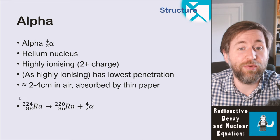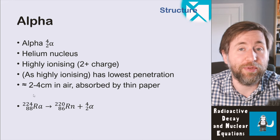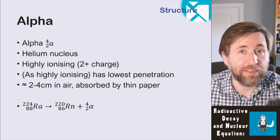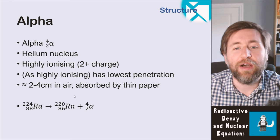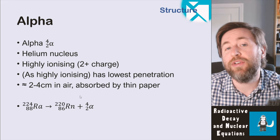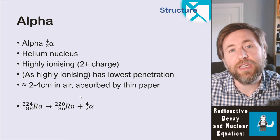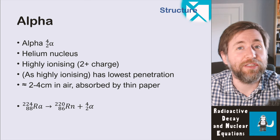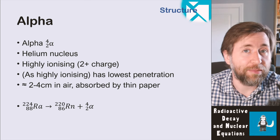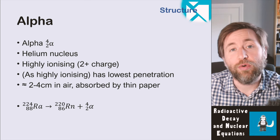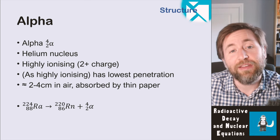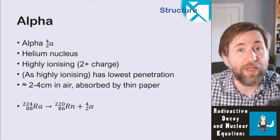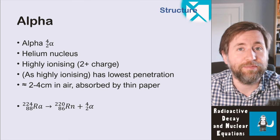If we're more than four centimeters away from an alpha source, the particles are very unlikely to hit us and ionize us. However, because it's very ionizing, if it gets inside the body — if it contaminates us through a cup or we swallow an emitter — then alpha particles can do a lot of damage because they're so highly ionizing.